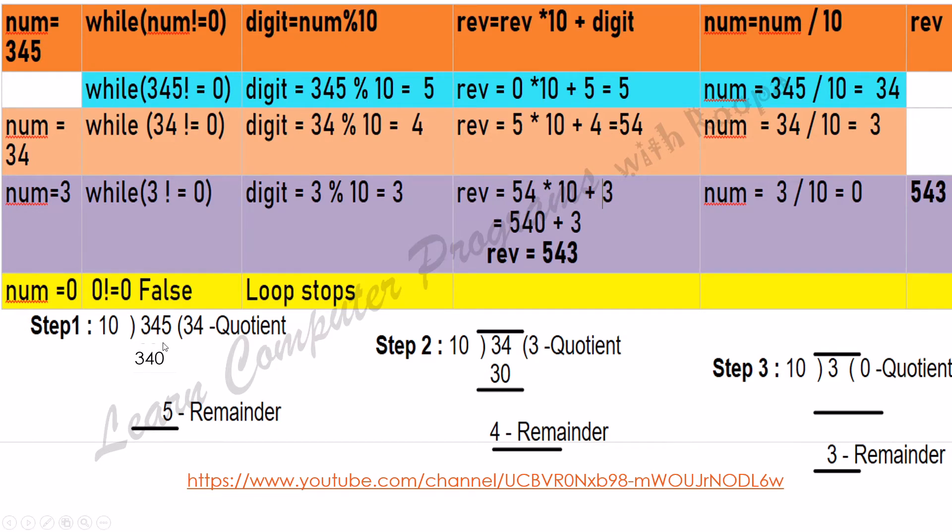This step I have shown here. When you divide 345 by 10, we get 5 as the remainder. And here we are going to extract the last digit. Initially, the value of rev is 0.